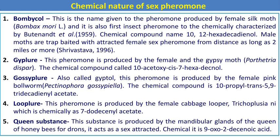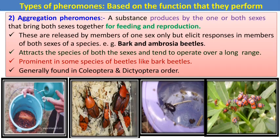Some sex pheromones isolated from insects include bombykol from Bombyx mori (silk moth), ziplure from the gypsy moth, gossyplure from the female pink bollworm, luplure from the female cabbage looper, and queen substance from the queen of the honey bee or termites.